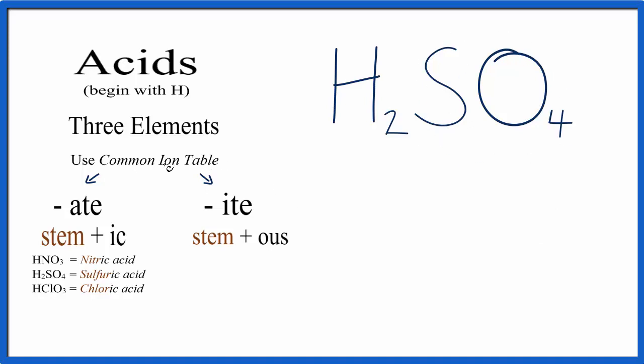So we'll go to the common ion table and find the name for SO4. Because hydrogen has a plus one charge, and we have two of them, this will be a plus two, and this is going to have a minus two. So it'll be SO4, two minus.